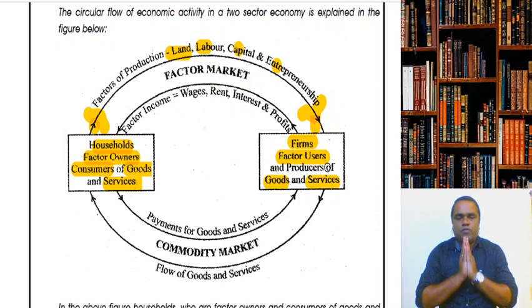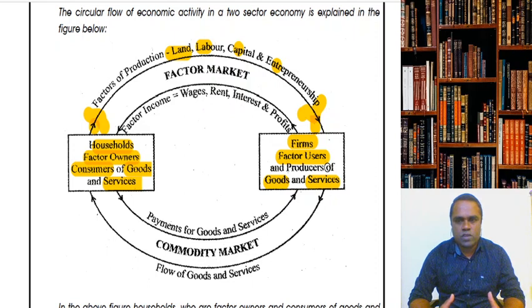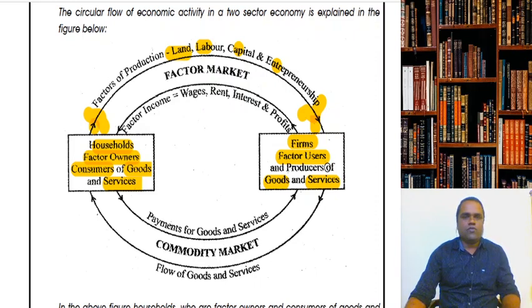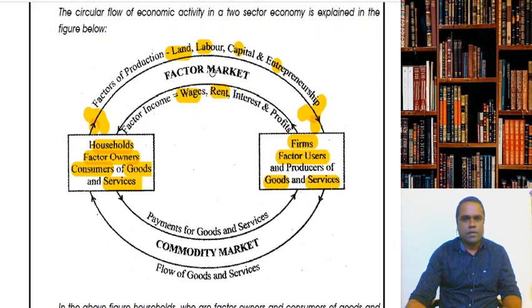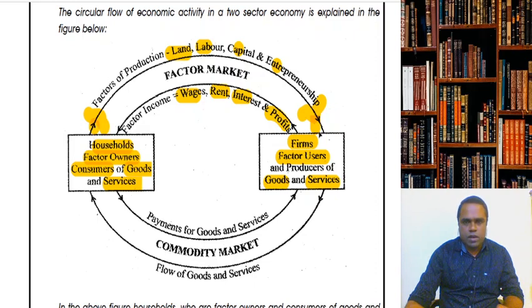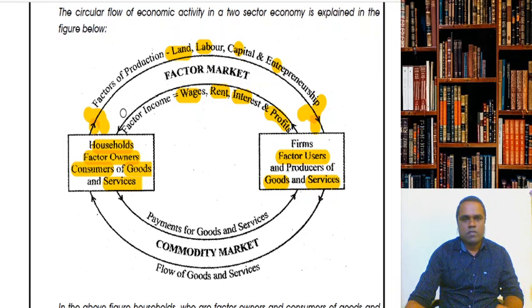Land, labor, capital, and entrepreneurship don't go free of cost. They will get an economic return, which is known as factor income. So when households provide land, labor, and capital to firms, the firms pay them factor income — wages for labor, rent for land, interest for capital, and profit for entrepreneurship. So there is a flow of factor income from firms back to households.